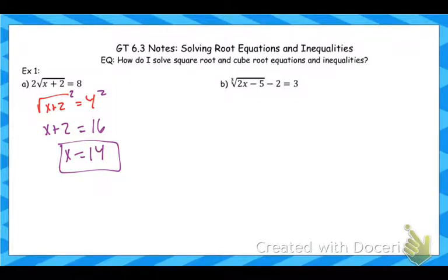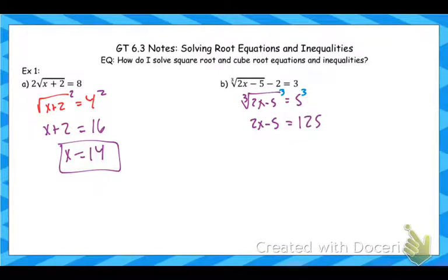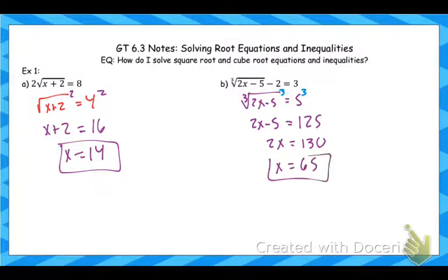Very similar in part b. The first thing is to get the root by itself, so add 2 to both sides. This time it's a cube root, so instead we cube both sides — cubing gets rid of the cube root. 5 cubed is 125, then we just solve for x: add 5, divide by 2, and we get x equals 65. Plug it back in, it works, and that is our solution.